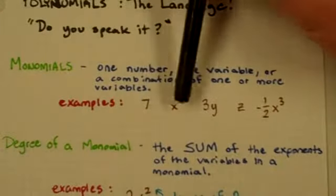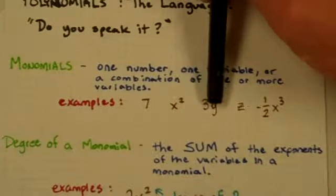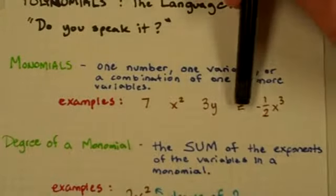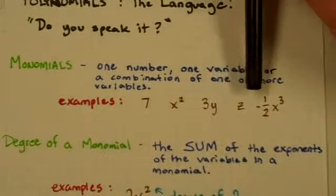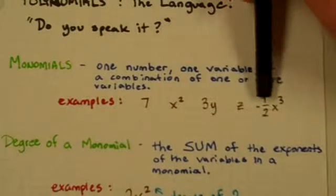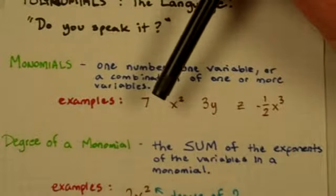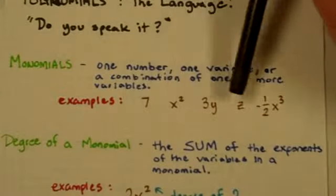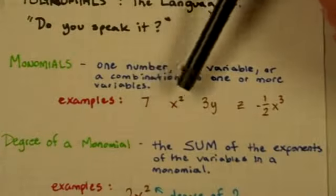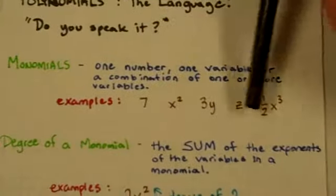Just a plain old 7, x squared like an x times an x. A 3 and a y combination of one or more variables, 3y. A z by itself is a monomial. Even negative one-half x to the third is a monomial. Basically it's a monomial if you don't see any plus or minus signs on them. And remember that's a negative sign not a minus sign. It's just one term is what we called it before.